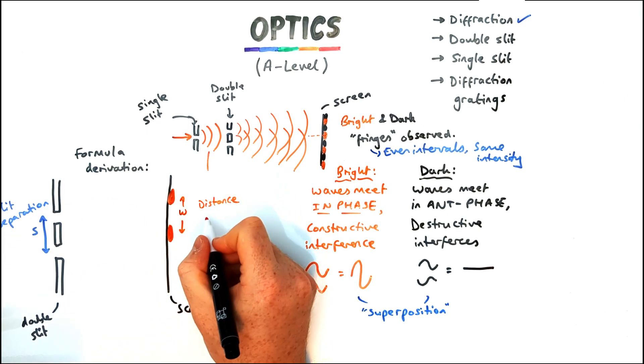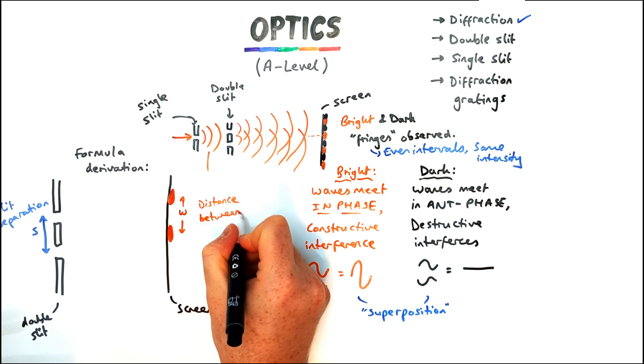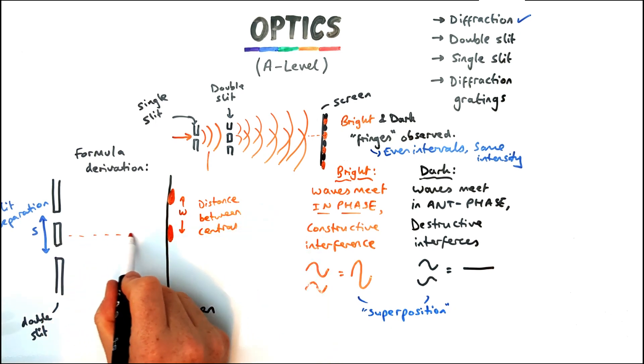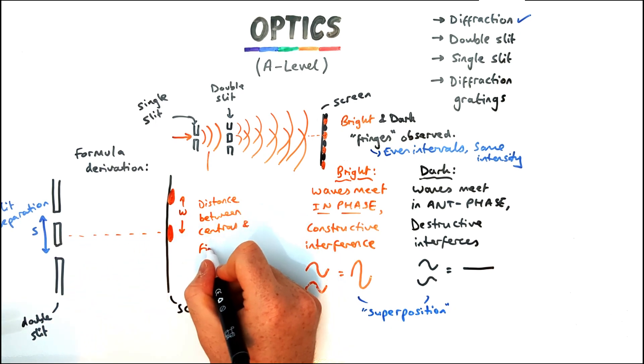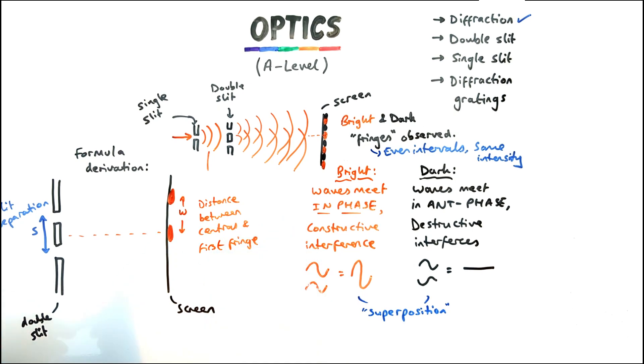The distance between those two is capital D and W is the distance between the centre of the central fringe and the centre of the first fringe. We're just looking at those two fringes for now. Okay now it goes without saying all these quantities will have to be in metres to be able for this to work.